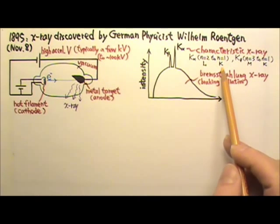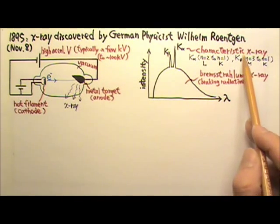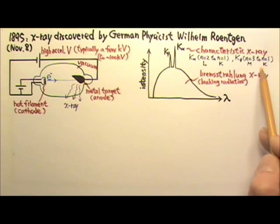A K-beta X-ray photon is emitted when an electron transitions from M, N equals 3, to K, N equals 1.